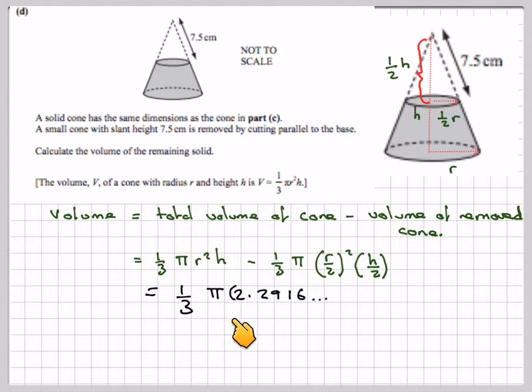So that's going to be 1 third pi, taking the numbers from the previous part, 2.2916 squared, this is this radius here, times the height which is 14.8239, which is this height here,